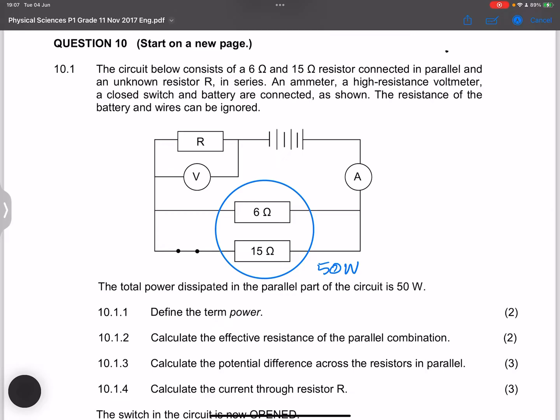Right now, they say define the term power. Remember that we say power is the rate at which work is done. Okay, so now they say to us, calculate the effective resistance of the parallel combination. So we know, so if we want Rp, I always say, well, you can if we've got two resistors...